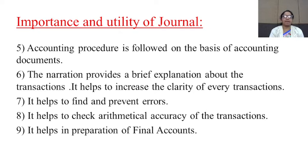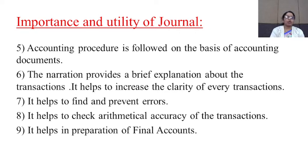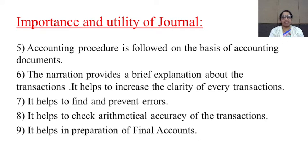Point seven: journal helps to find and prevent errors. If any errors or mistakes are there, you come to know immediately. Point eight: it helps to check the mathematical accuracy of the transaction. Point nine: it helps in preparation of final accounts. Journal is the base — the book of original or primary entry. From journal, ledger is prepared; from ledger, trial balance is prepared; and on the basis of trial balance, final accounts are prepared, which consist of trading account, profit and loss account, and the balance sheet showing liabilities and assets.